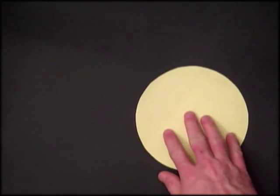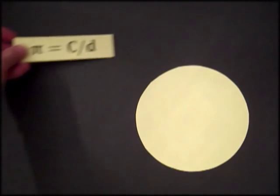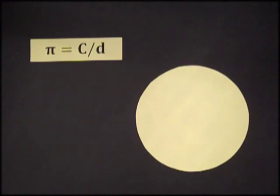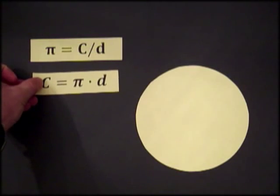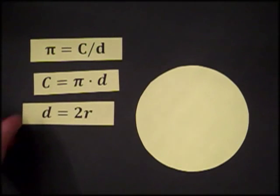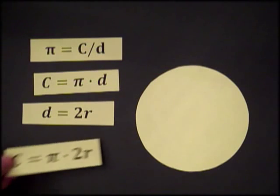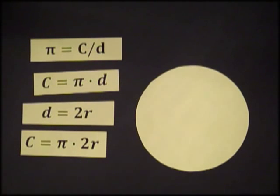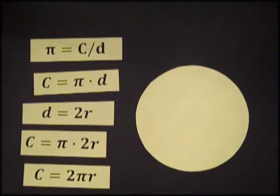Now you can write this relationship as an equation: pi equals c divided by d, where c is the circumference and d is the diameter of the circle. You can rearrange this equation so that, given the diameter of a circle, you can find its circumference, so c equals pi times d. Another way to write this, since half the diameter is the radius, is c equals pi times 2r, or c equals 2 pi r. This is probably the way you're used to seeing the formula for the circumference of a circle.